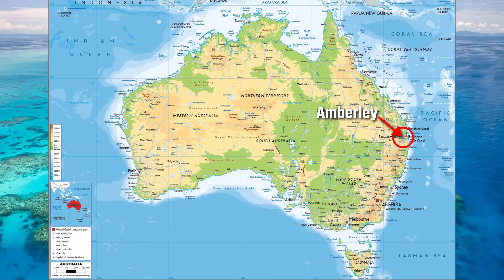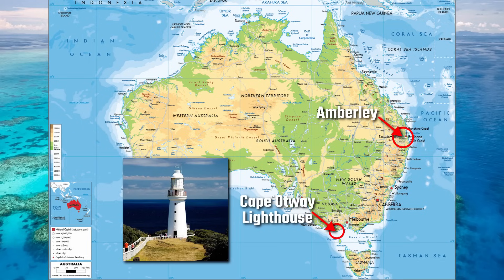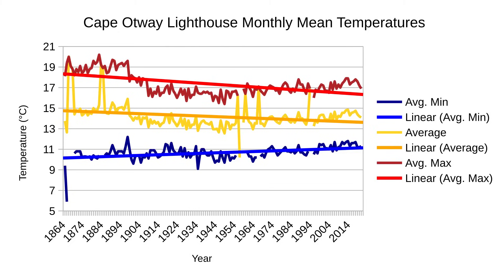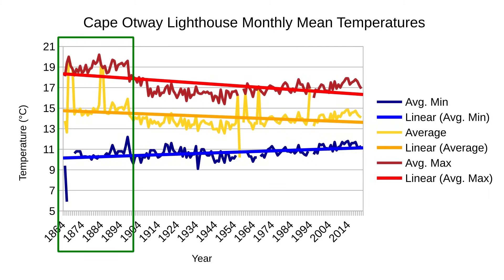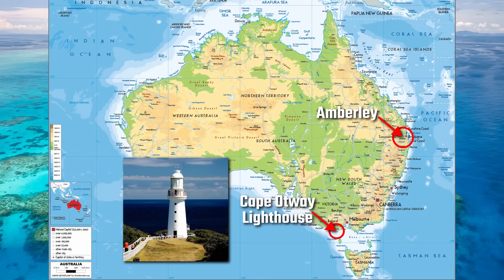For the second location, I found somewhere well away from a city — the Cape Otway Lighthouse on the coastline of southern Victoria. Here's a chart showing the average temperatures over time. Although the minimum temperature seems to be trending upwards, the average maximum temperatures seem to be trending downwards, as is the average of the two. One might argue that data from the 1800s cannot be relied upon, but I'm just showing you the published data.